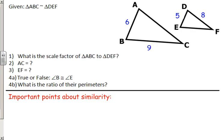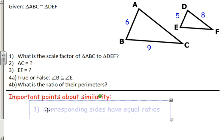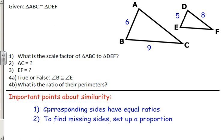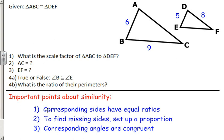The first question is numbers 1 through 4B, which is a good example to really explain what similarity is. Similar figures — triangle ABC and triangle DEF — have some main things to remember: corresponding sides have equal ratios, to find missing sides you need to set up a proportion which is an equation of ratios, and corresponding angles of similar figures are the same. Their angles remain the same but their sides differ by the same ratio.